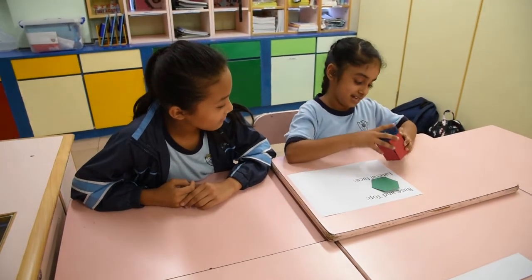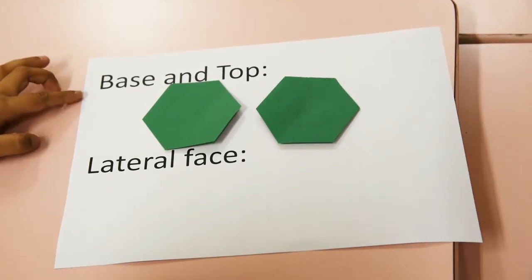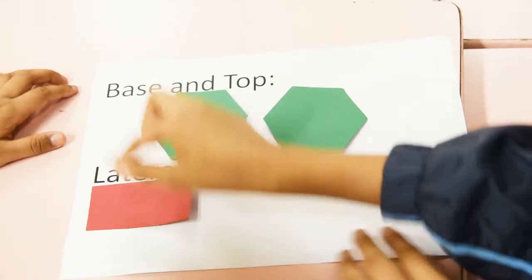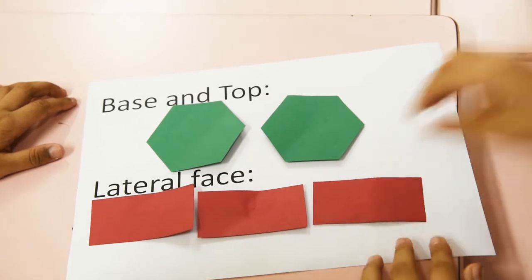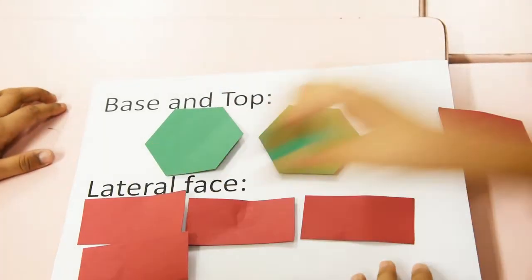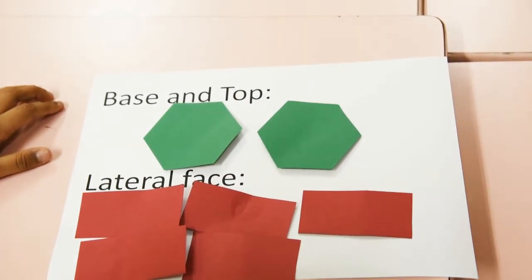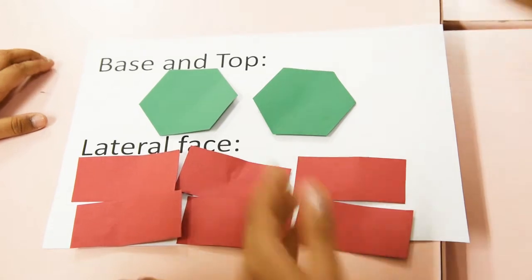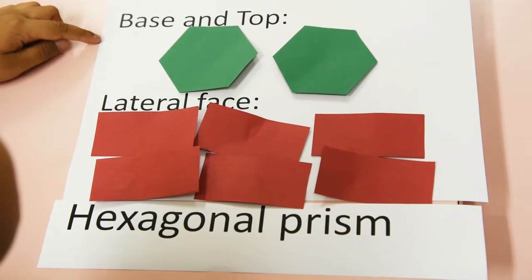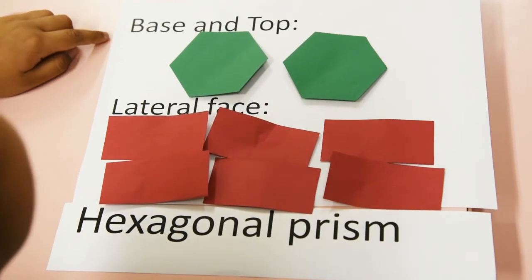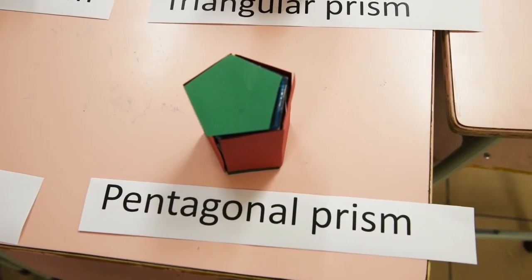Top and base. Lateral face. I know this. It is a hexagonal prism. The top and the base are hexagon. It has 8 faces.